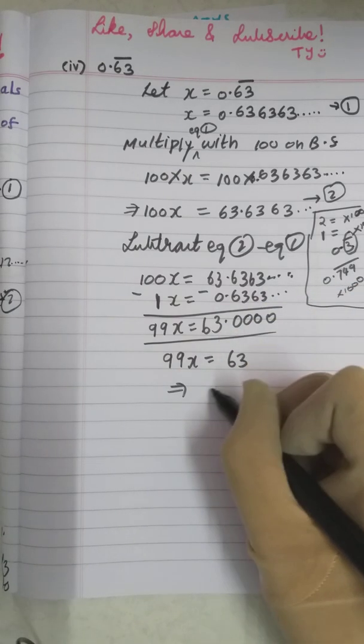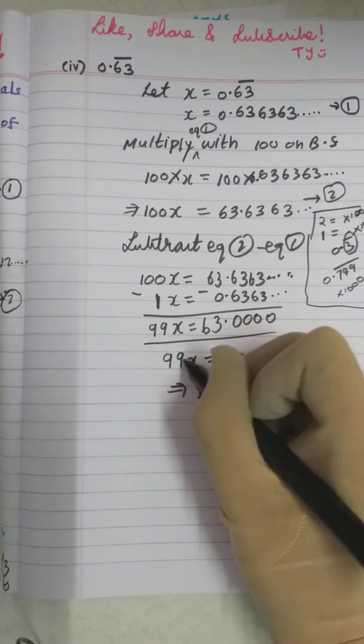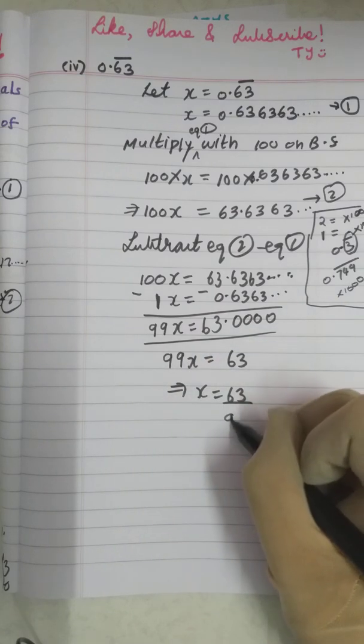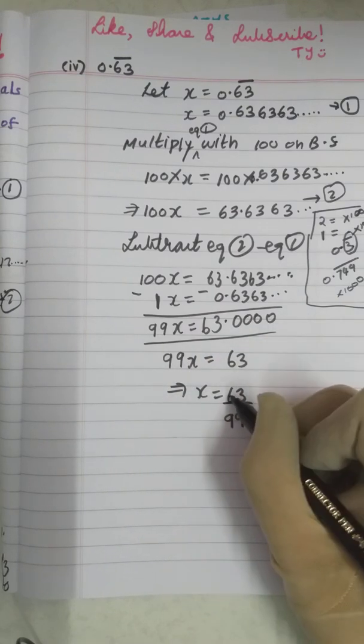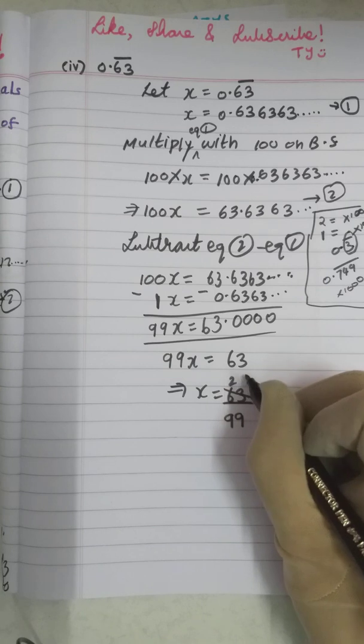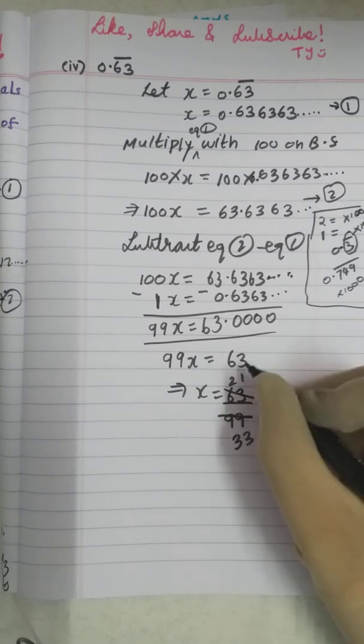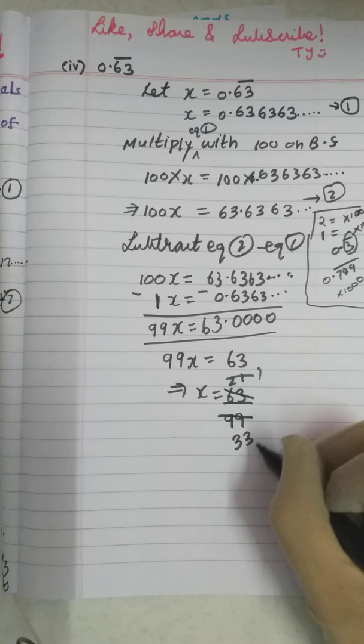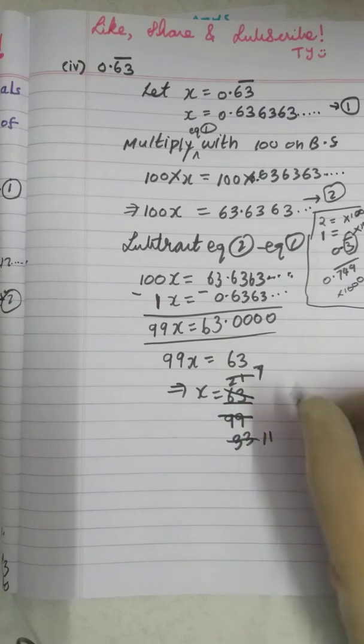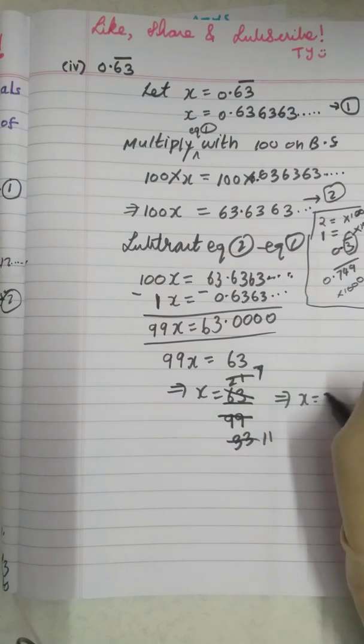So this becomes X equals 63 divided by 99. Now, this will go in 3 table. 3 × 21 is 63. 3 × 33 is 99. Again, it will go in 3 table. 3 × 7 is 21. 3 × 11 is 33. So we got the value of X as 7 by 11.